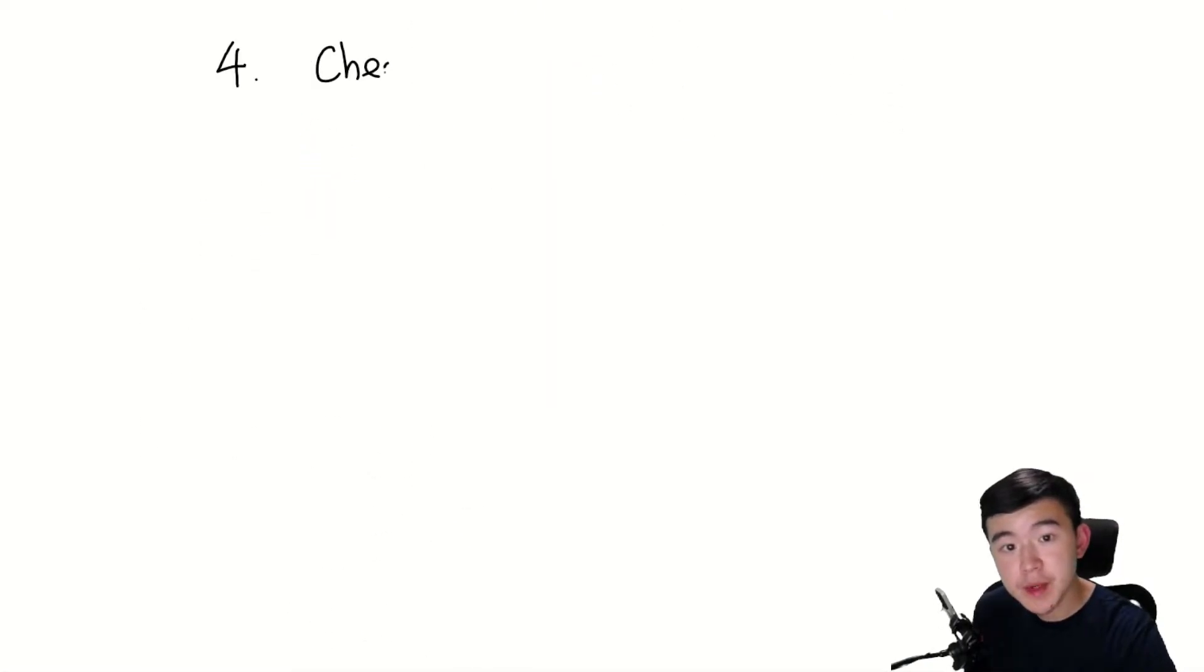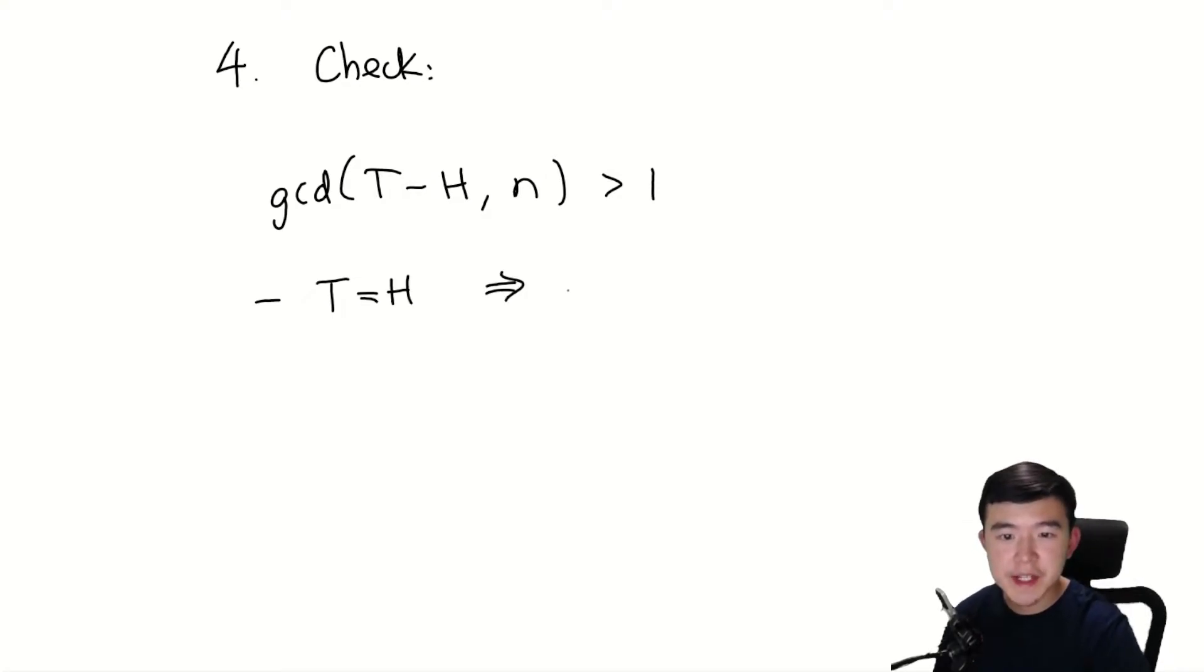At every step, we're going to do a check. We're going to check if the greatest common divisor of t minus h and n is greater than 1. Now, there are two cases. The first case is that t equals h, but this just gives us that gcd(0, n) = n, which is indeed greater than 1. This gives us no helpful information.